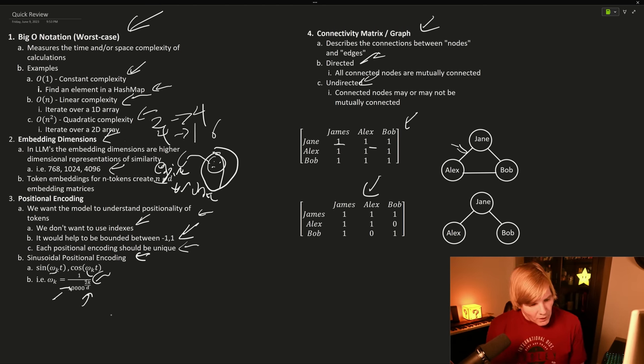Then Alex and Bob would not be connected. And if we look at what we would call an adjacency matrix, we would see that they have zeros here instead of ones. So now let's move on and talk about the actual challenges in increasing our context length.